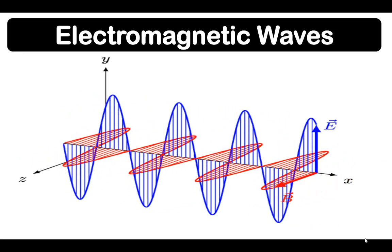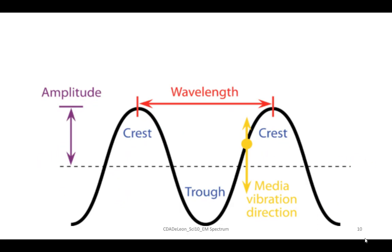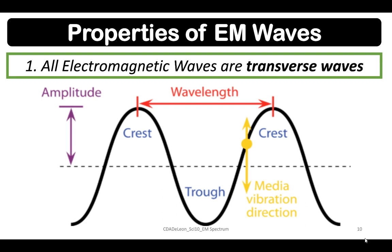Now let's discuss the properties of electromagnetic waves. Number one, all electromagnetic waves are transverse waves. As you can see in the picture, we have certain parts: the crest, which is the highest part of the wave; the trough, which is the lowest part; the wave height, which is the vertical distance between the trough and the crest; the wavelength, which is the distance between two consecutive crests or troughs; and amplitude, which refers to the maximum displacement of a particle on a medium from its rest position.